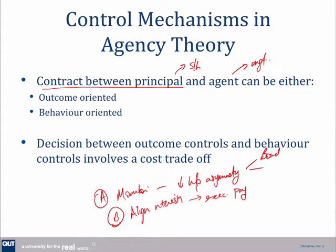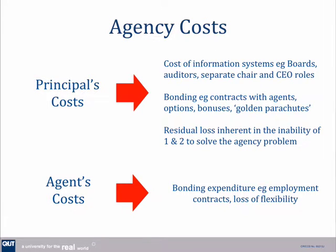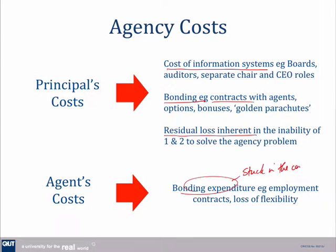There are two actions we can take to reduce agency costs: we can put in place a board to monitor, we can have an auditor to monitor, and we can have remuneration structures that actually align those interests. Agency costs can be summarized as the cost of the information systems, the bonding costs — such as the contracts that align them — and some form of residual loss that we're never going to get rid of entirely. Note also that the agent has costs too in that they are tied to the company, so these costs are what we're trying to minimize in our governance arrangements.